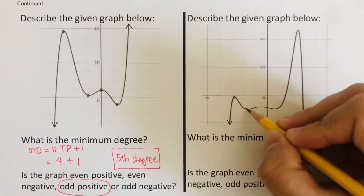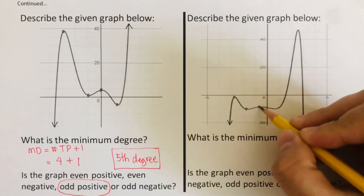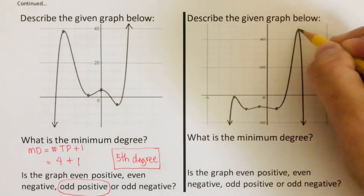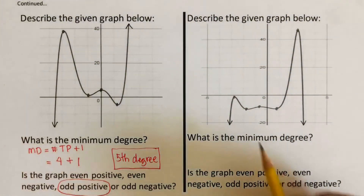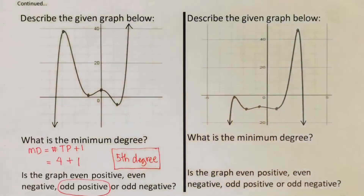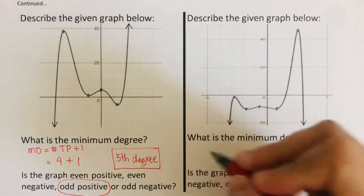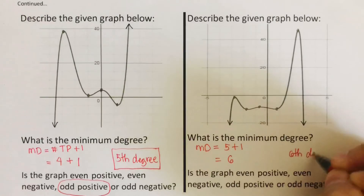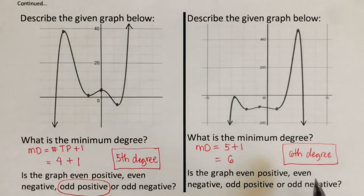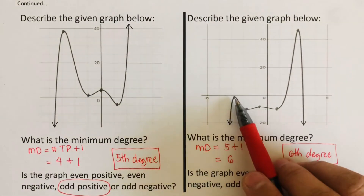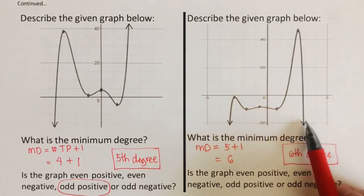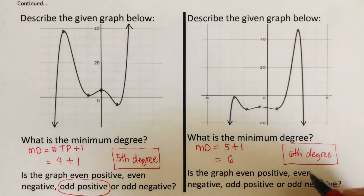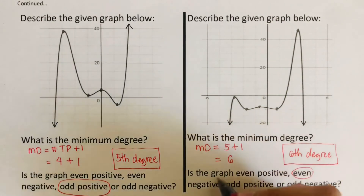That's one turning point, another turning point, another turning point, another turning point, and another turning point — so we count one, two, three, four, five. There are five turning points, so the minimum degree is five plus one, giving us a sixth degree polynomial. Since both the left end and the right end are directed downward, this graph is even negative.